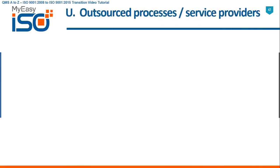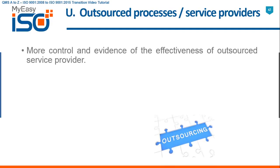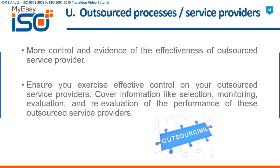U — Outsourced Processes and Service Providers. More control and evidence of the effectiveness of outsourced service providers is required — covering selection, monitoring, control, and re-evaluation. Ensure you exercise effective control on your outsourced service providers. Cover information like selection, monitoring, evaluation, and re-evaluation of the performance of these outsourced service providers.